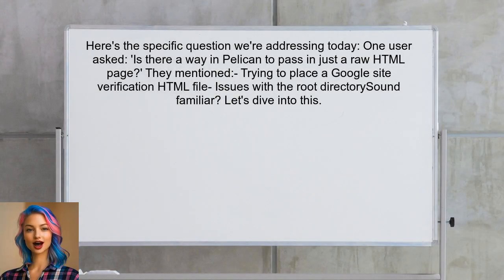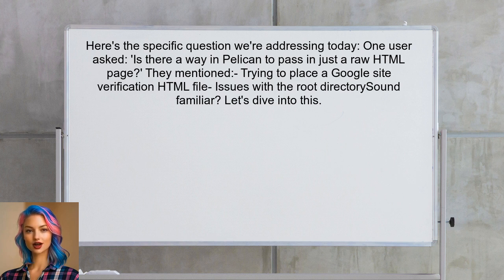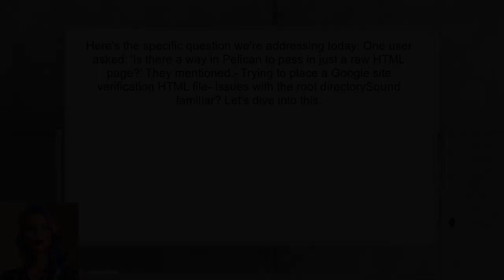Here's the specific question we're addressing today. One user asked: is there a way in Pelican to pass in just a raw HTML page? They mentioned trying to place a Google Site Verification HTML file in the root directory but ran into issues. Sound familiar? Let's dive into this.